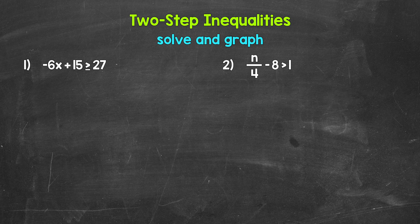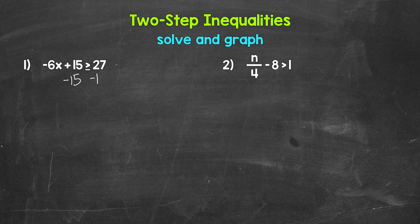Let's jump into number one, where we have negative six X plus 15 is greater than or equal to 27. Just like with a two-step equation, we want to undo the addition first. We go in the reverse order of operations to undo the operations and isolate the variable — undo the addition first, then the multiplication. The inverse operation of addition is subtraction, so subtract 15 from both sides. On the left side, the 15s cancel each other out, so we have negative six X is greater than or equal to.